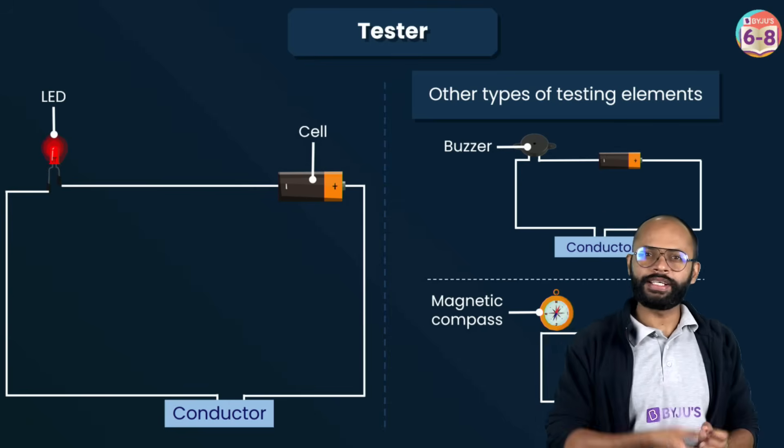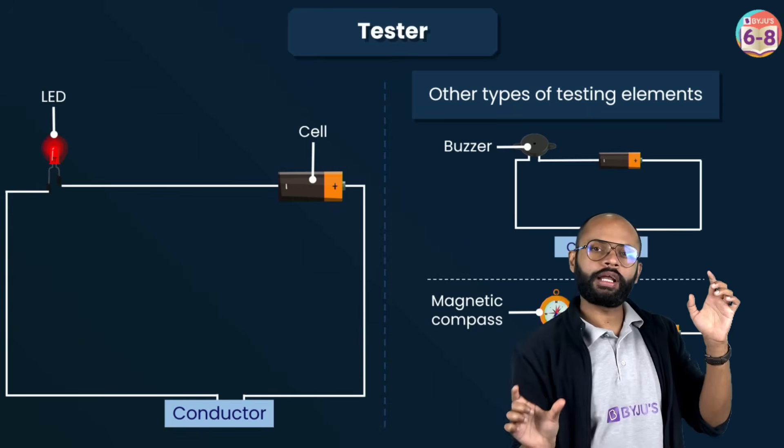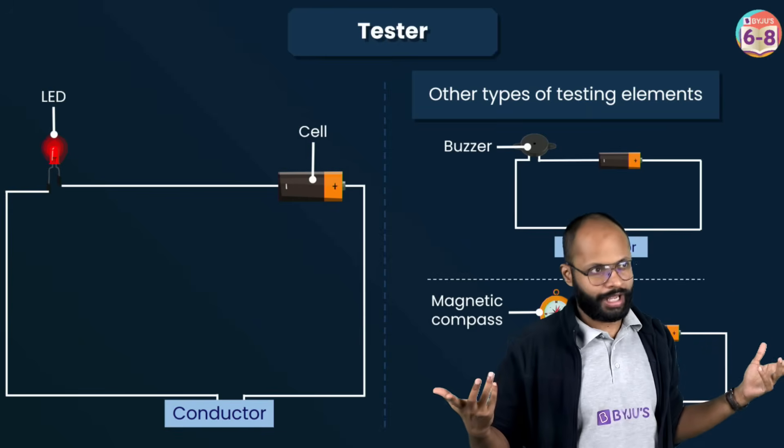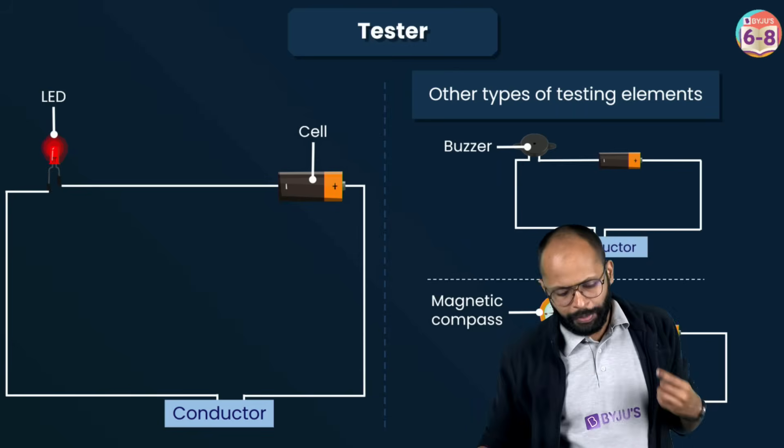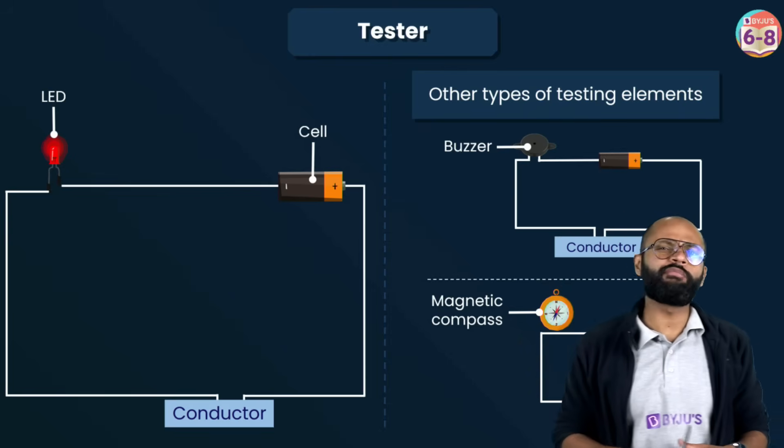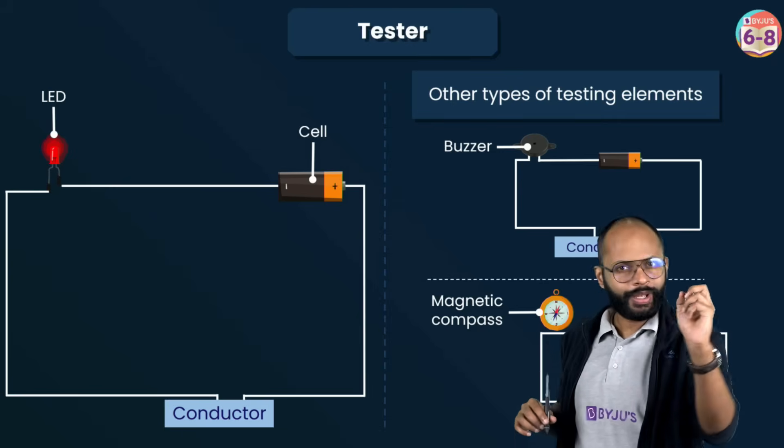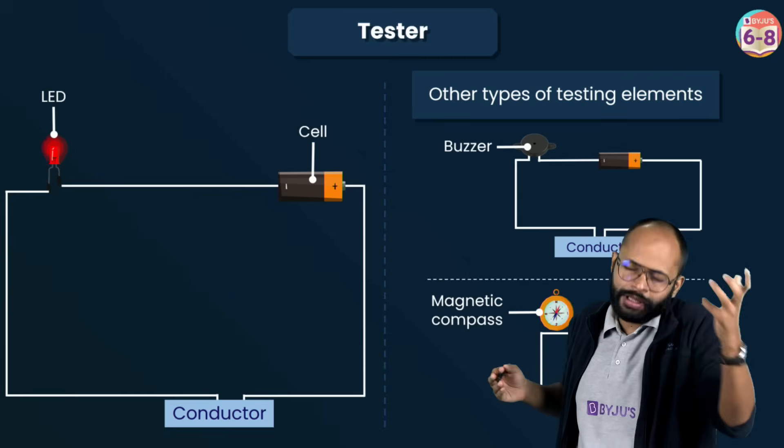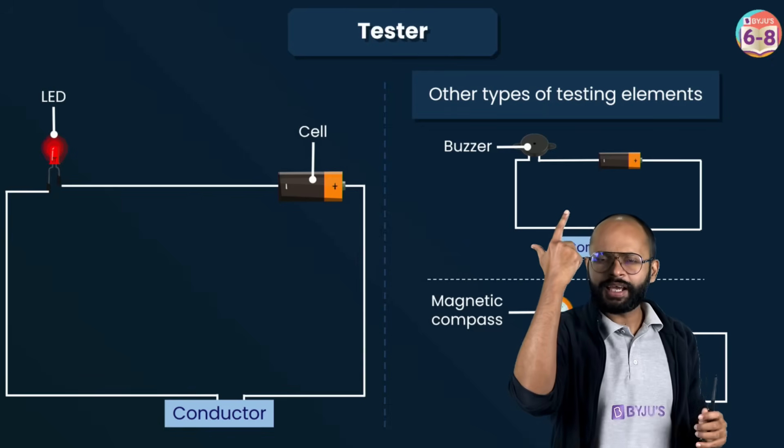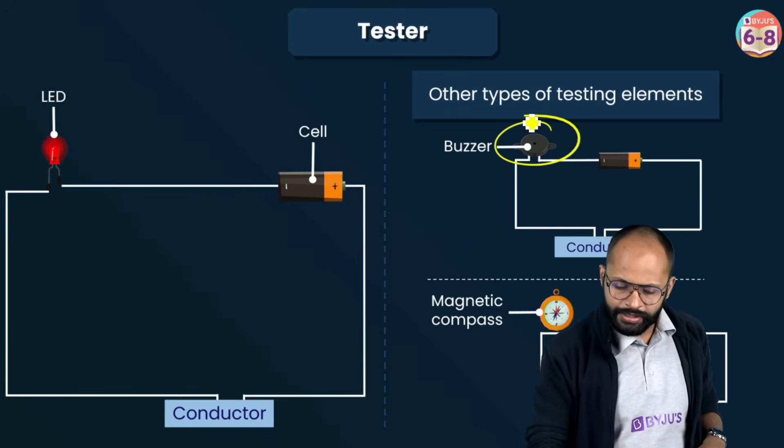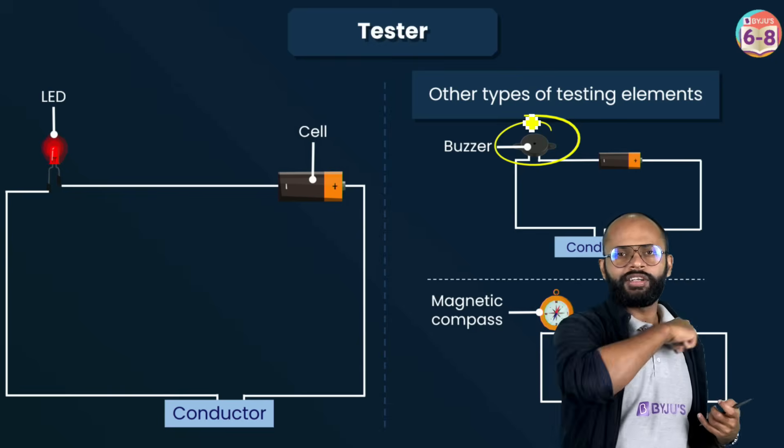I just told you testing LED was one way. Glowing of LED would mean that this material is allowing current to pass through it. That became a tester for you. The LED glowing was telling you that current is there. But there could be other ways also of making a tester. You just need an indication that whenever current is flowing in the circuit, there should be something which you can sense.